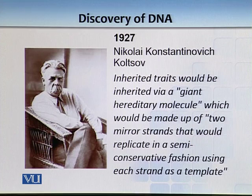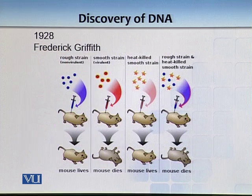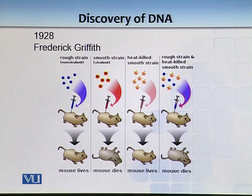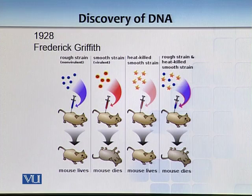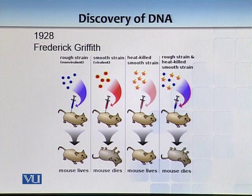In 1928, Frederick Griffith established that there is some sort of transformation which happens in bacteria. At that time, pneumonia was very common and there were two strains: one was a rough strain and the other was a smooth strain. The rough strain was non-virulent while the smooth strain was virulent.